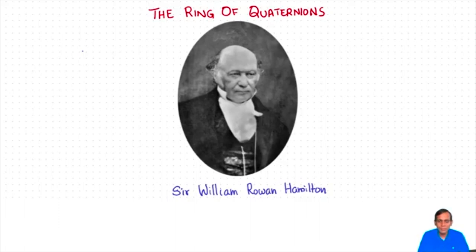This problem session is going to be based on a very special ring: the Ring of Quaternions. The Ring of Quaternions was discovered by Sir William Rowan Hamilton, an Irish mathematician, in the year 1843.